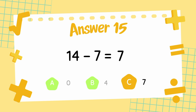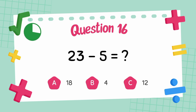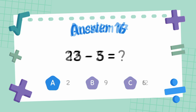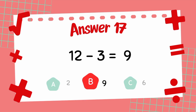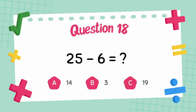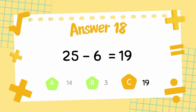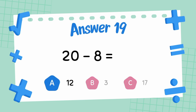The answer is 7. What is 23 minus 5? The answer is 18. What is 12 minus 3? The answer is 9. What is 25 minus 6? The answer is 19. What is 20 minus 8? The answer is 12. What is 18 minus 4?